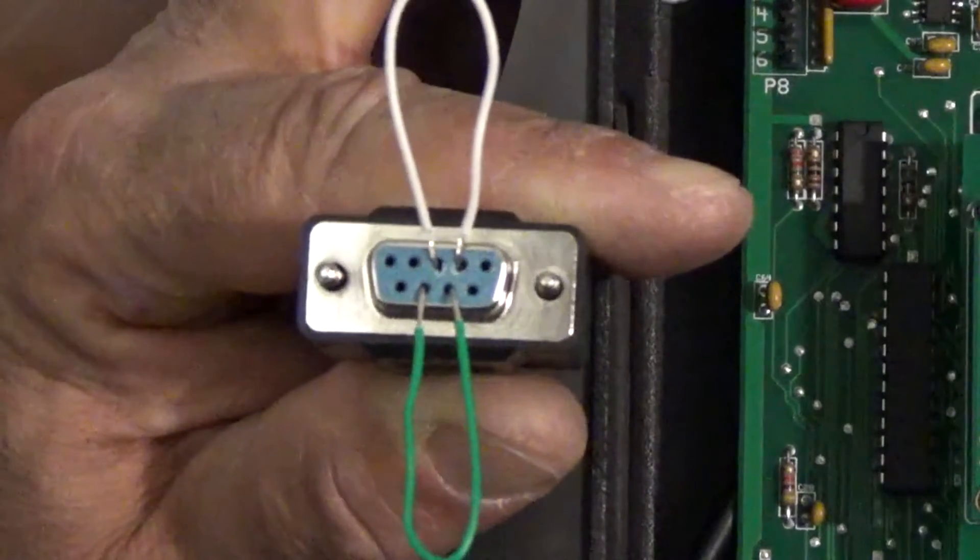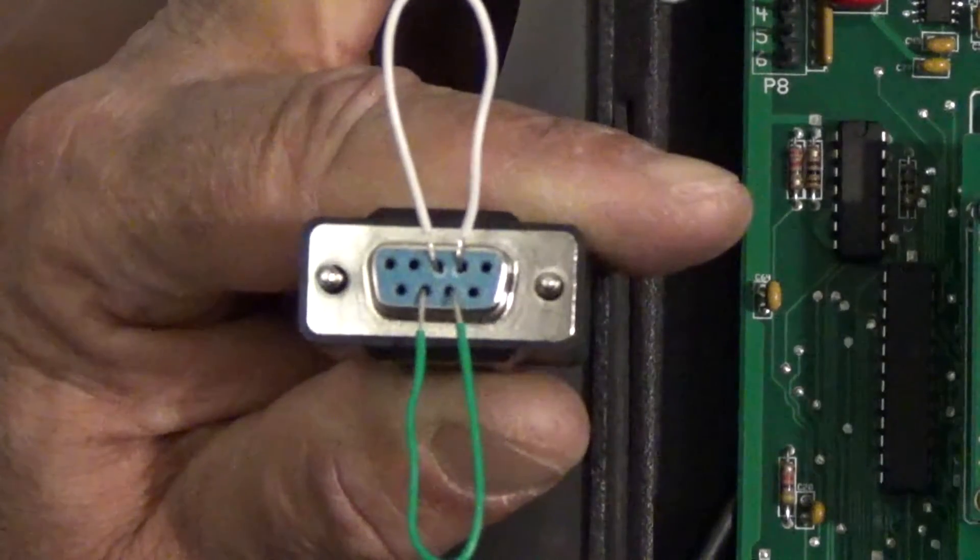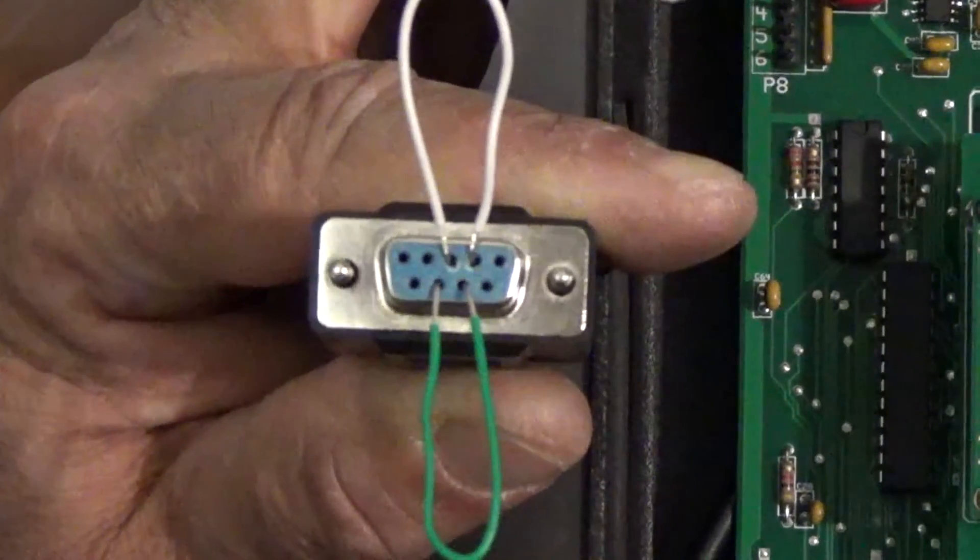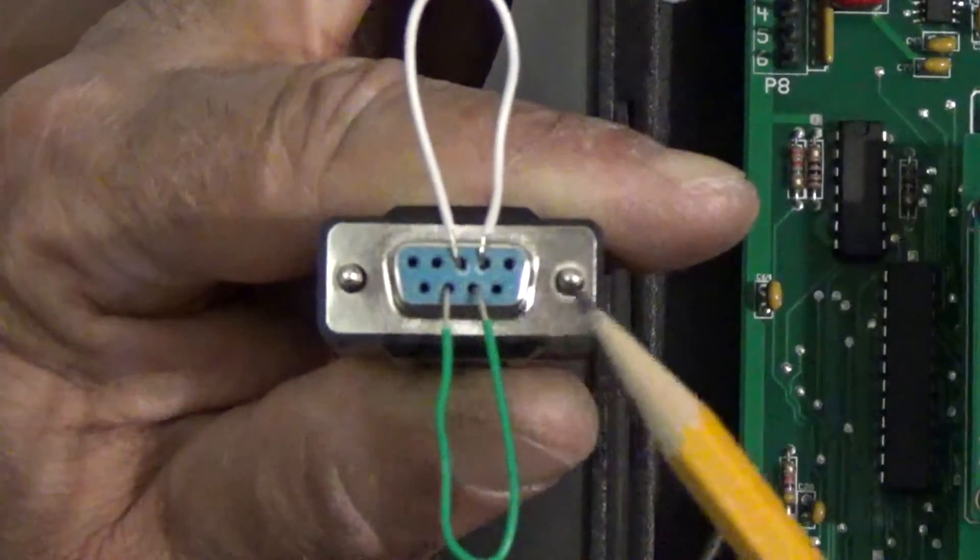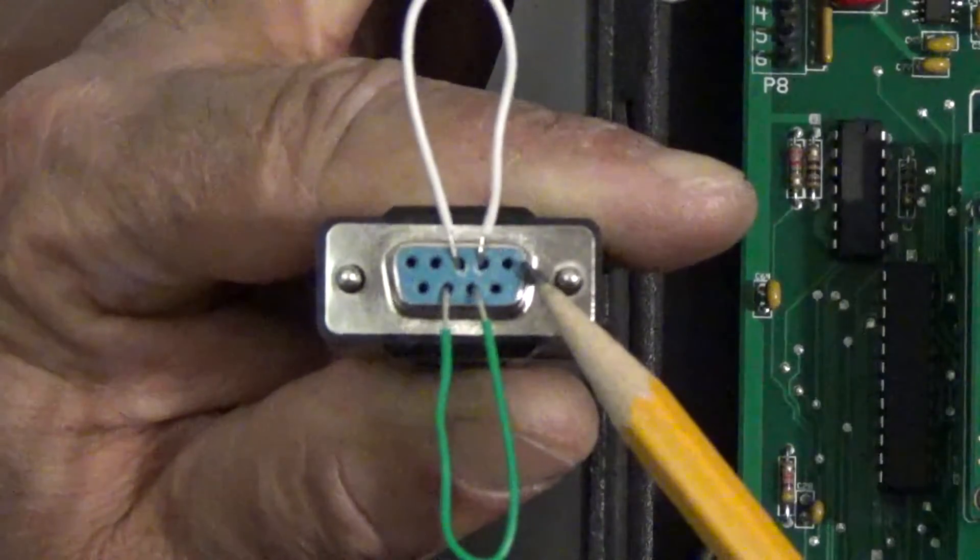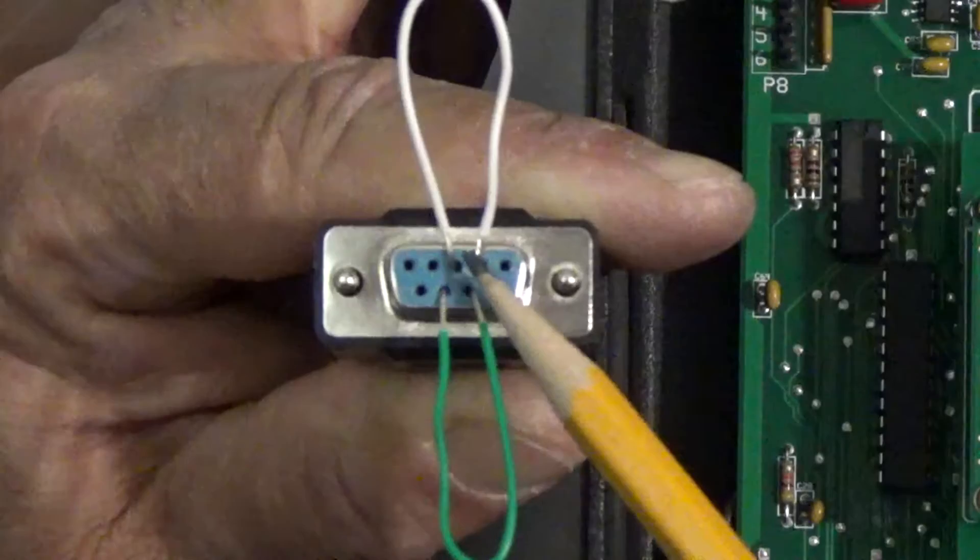This view here is looking at the female end of a DB9 connector on our serial cable. Let's look at the orientation. We have five holes on top and four holes on the bottom. The upper right hole is pinhole number one, to the left of that is pinhole number two, and to the left of that is three.